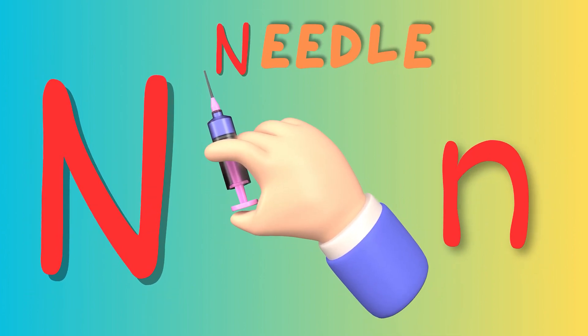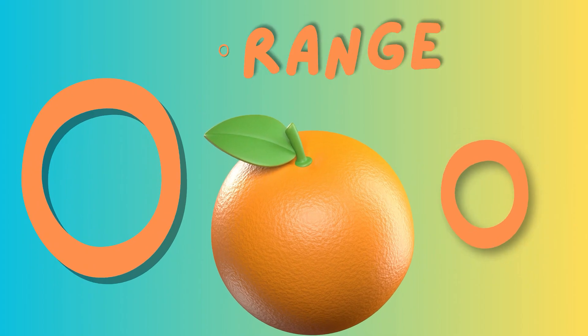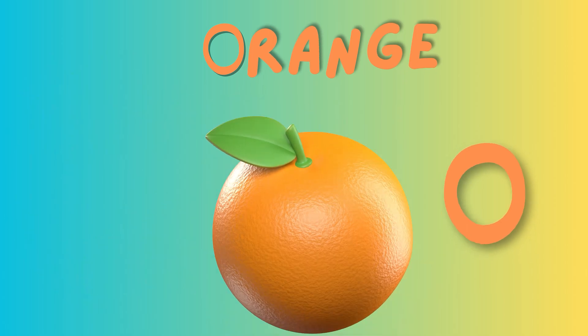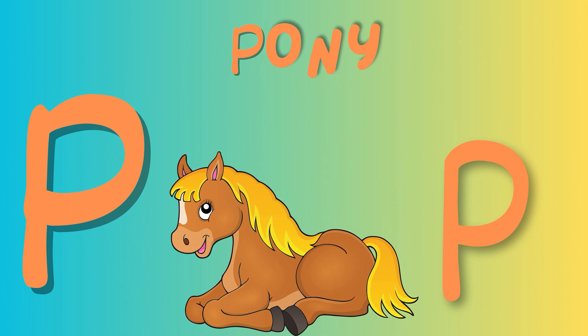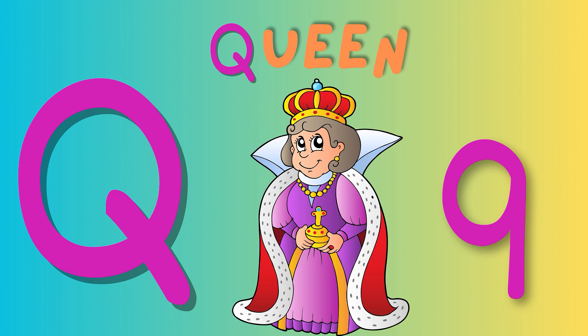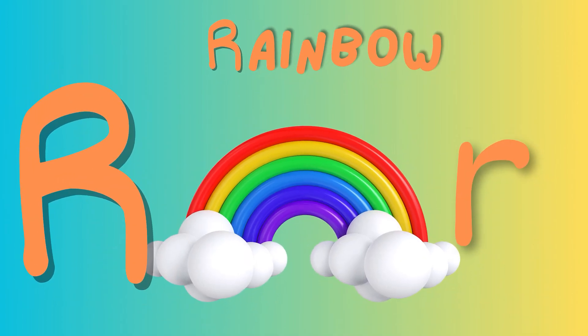N is for needle. Needle, needle. This is a needle. Needle, needle. O is for orange. Orange, orange. This is an orange. Orange, orange. P is for pony. Pony, pony. This is a pony. Pony, pony. Q is for queen. Queen, queen. This is a queen. Queen, queen. R is for rainbow. Rainbow, rainbow. This is a rainbow. Rainbow, rainbow.